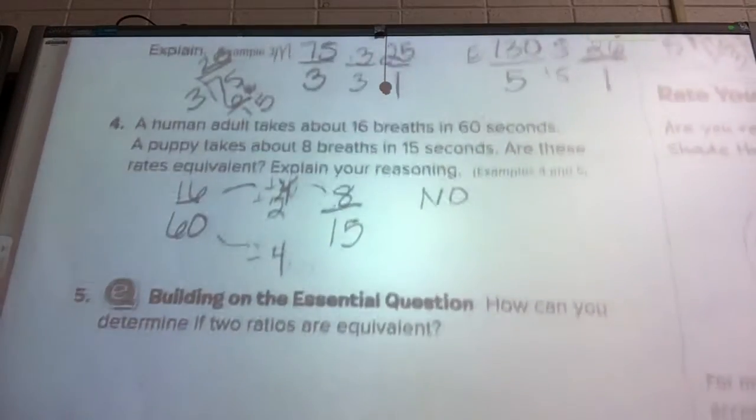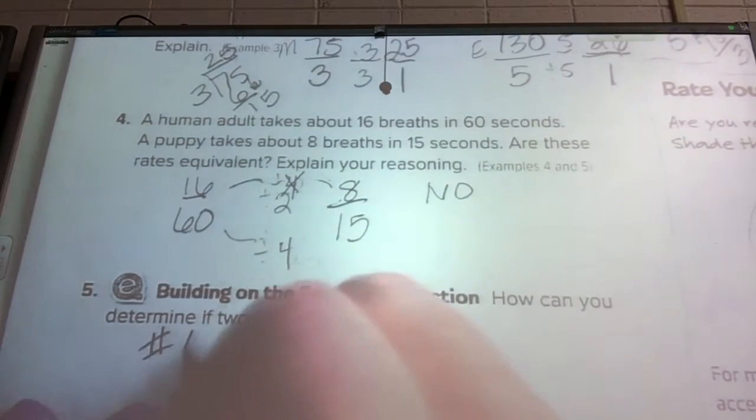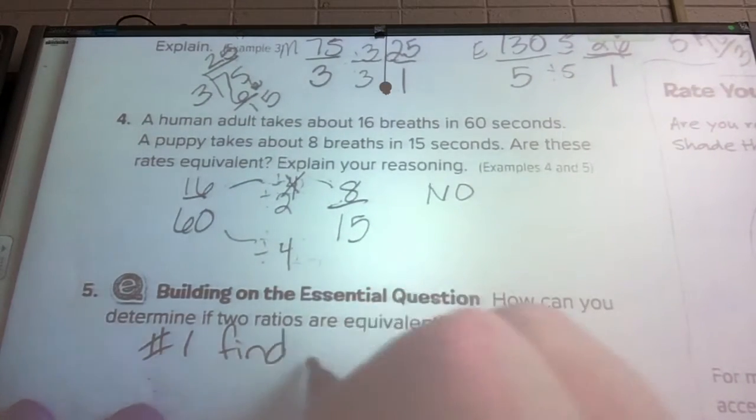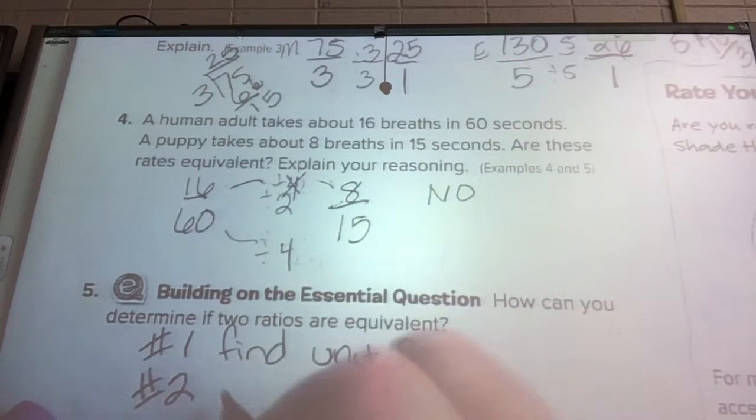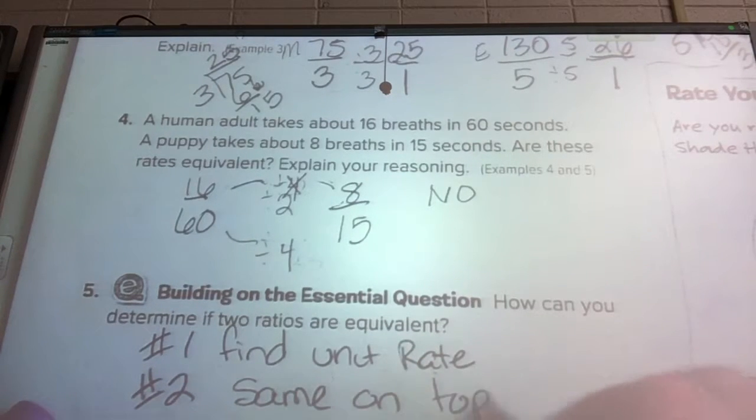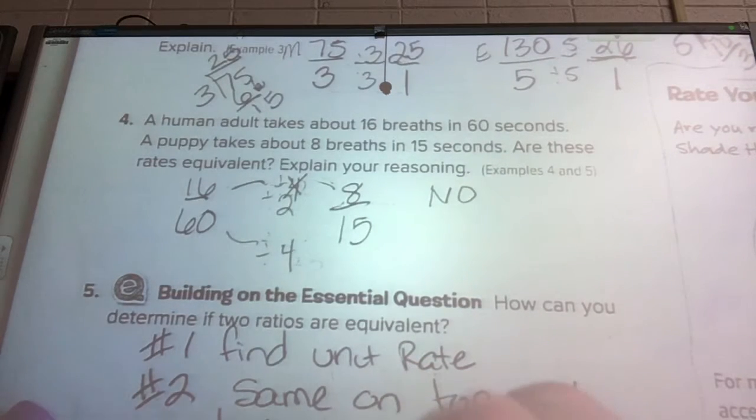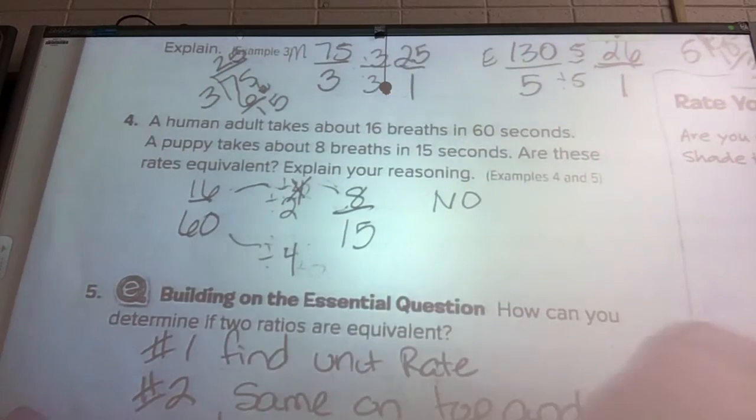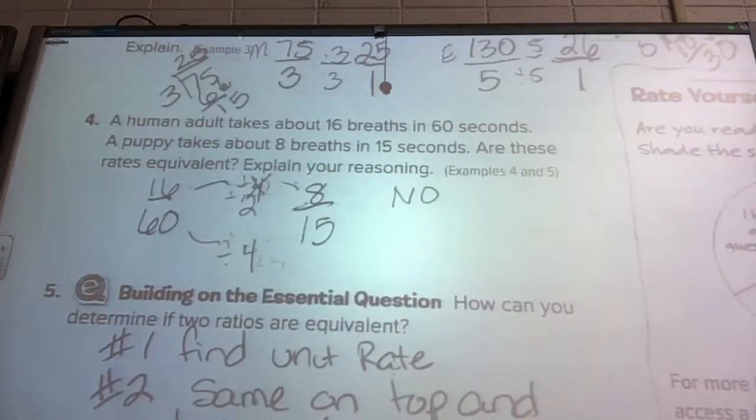So how can we determine if two rates are equivalent? There's two ways. Number one, find the unit rate. Number two, same on top and bottom - multiply or divide. You can't add or subtract, but it's got to be multiply or divide for those.